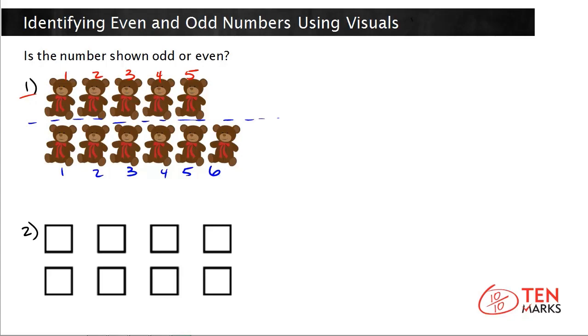Because remember, even numbers can be written as a doubles fact. So 5 plus 5 would be two equal groups of 5 and that has a sum of 10. And we don't have 10 here. We actually have 5 plus 6. And what happens if you add 6 plus 6? 6 plus 6 is 12.